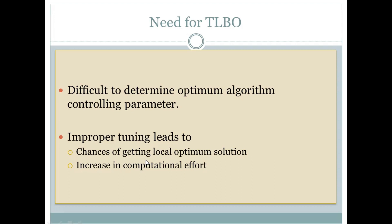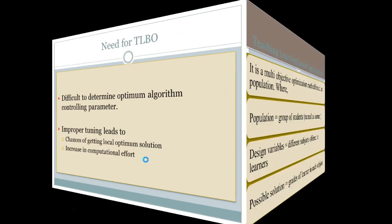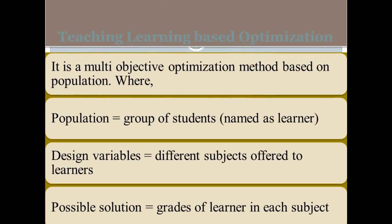Improper tuning also increases computational efforts. The beauty of the TLBO algorithm is that no algorithm-specific parameters are involved — we only need to look at common controlling parameters like population size and number of generations. So TLBO is essentially a multi-objective optimization method where we have a population.